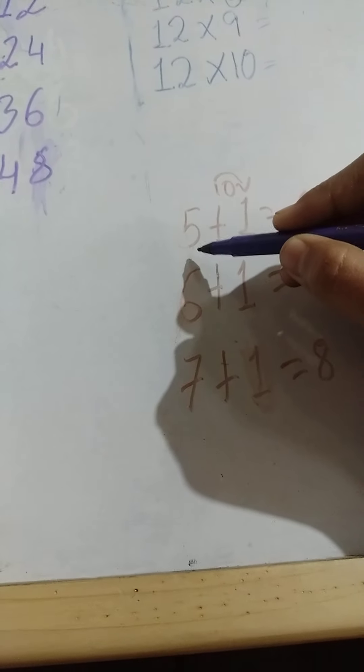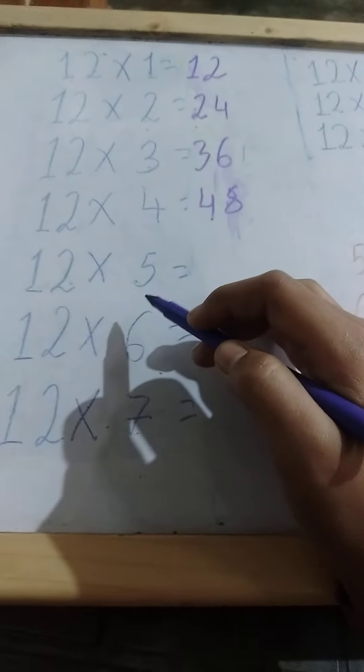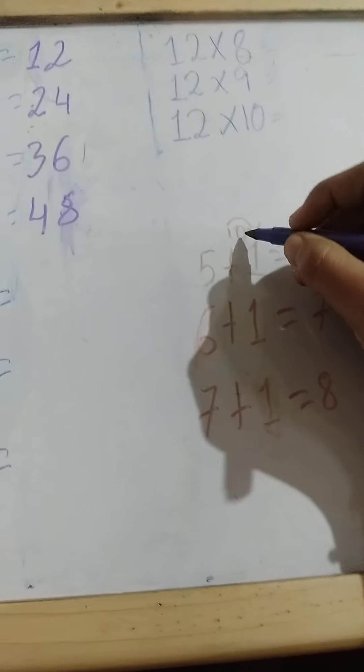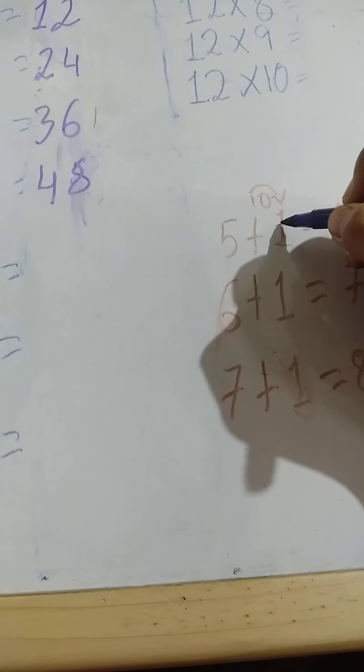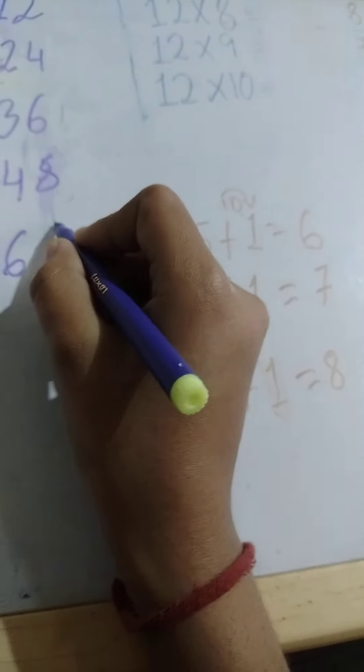Next, for 5: 5 ones are 5. Now we will not write the 5 directly. We put the 5 in our hand and count — 5 twos are 10. So the 1 from 10 will be added to 5, giving the answer 6. The 0 is also in our hand, so we write the 0.